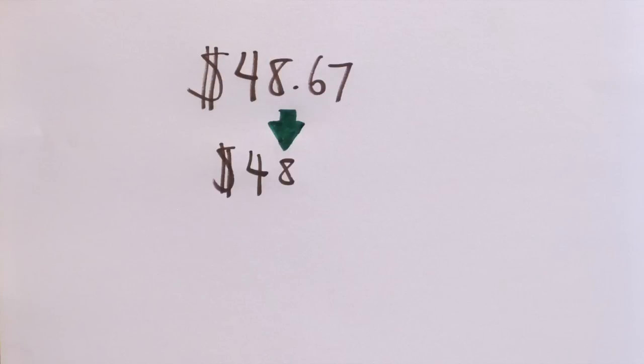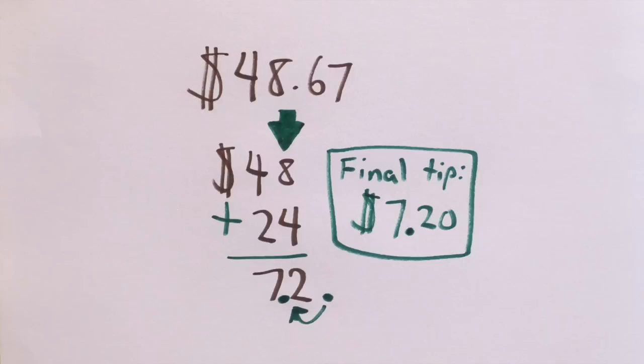So do 48 plus its half, so 48 plus 24, which gives you 72, and move the decimal. Your tip is $7.20.